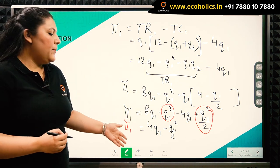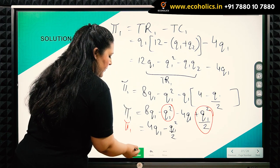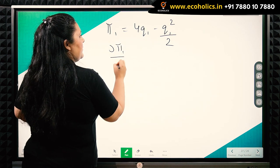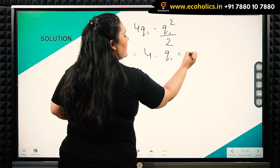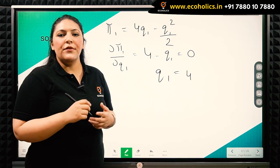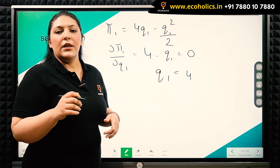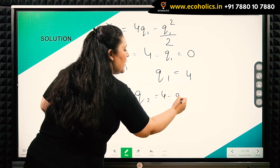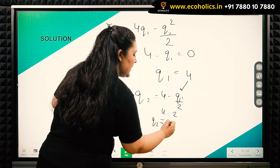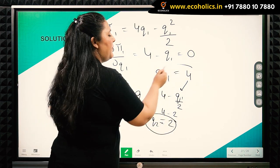This is the profit function for the first firm, which is the leader firm. Taking the first-order differential and setting it equal to zero, we get Q1 equal to 4. The quantity produced by the leader firm is 4. Putting this into the reaction curve of the second firm — Q2 equals 4 minus Q1 over 2 — we get 4 minus 4 over 2, which equals 2. So the follower firm produces a lesser quantity compared to the leader firm.